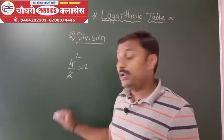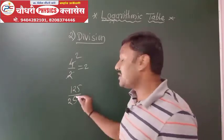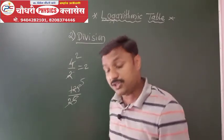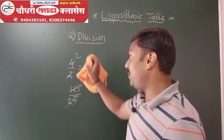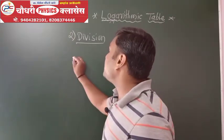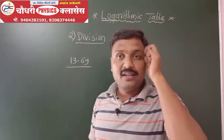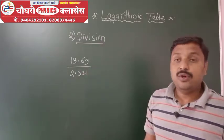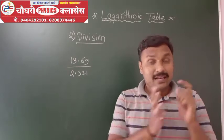If you say this is complicated, consider 125 divided by 25 — that gives you 5. But what about a really complicated calculation like 30269 divided by 2.321? This calculation is complicated, and for such complicated division, we solve it using logarithms.